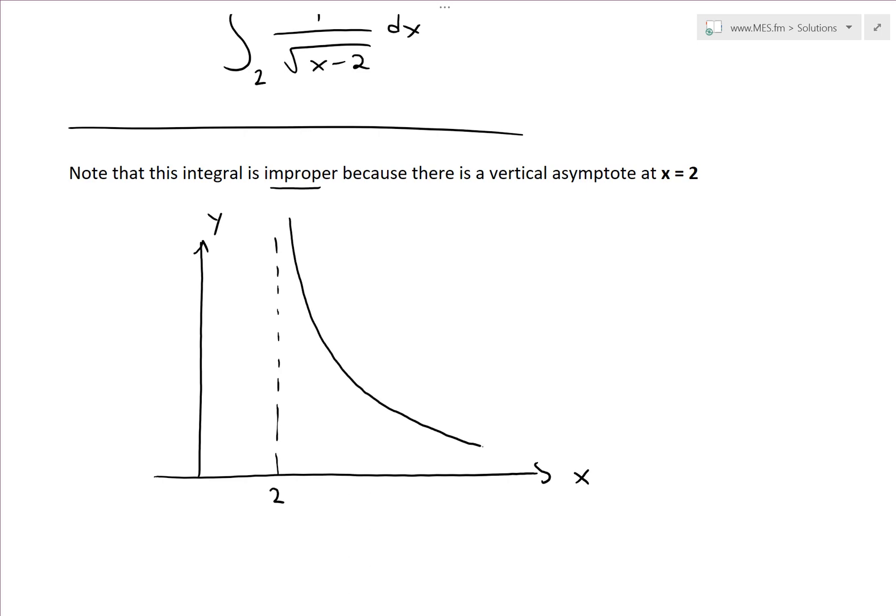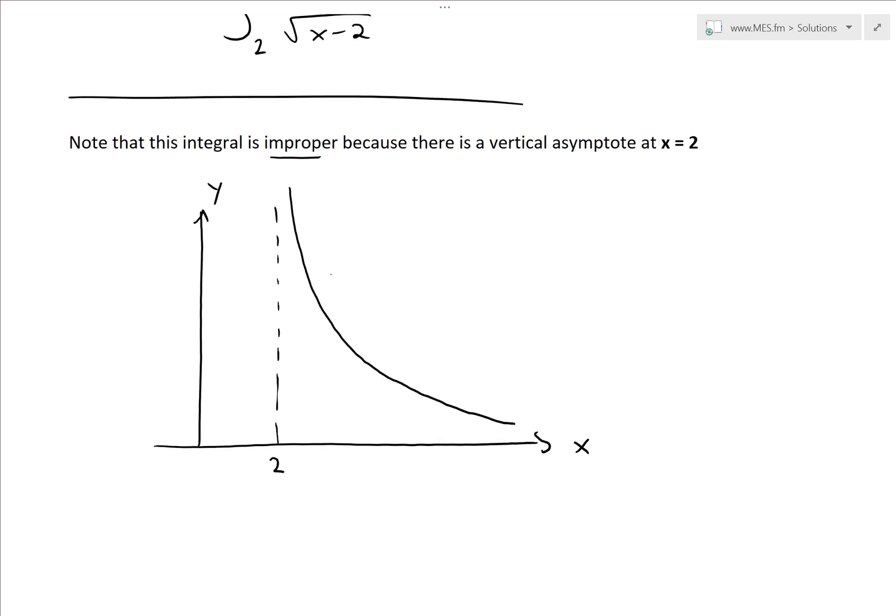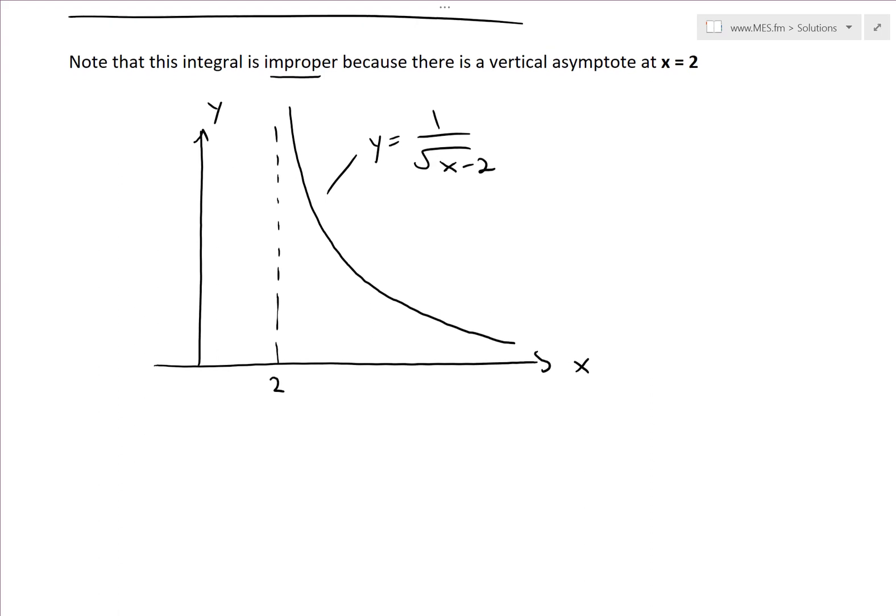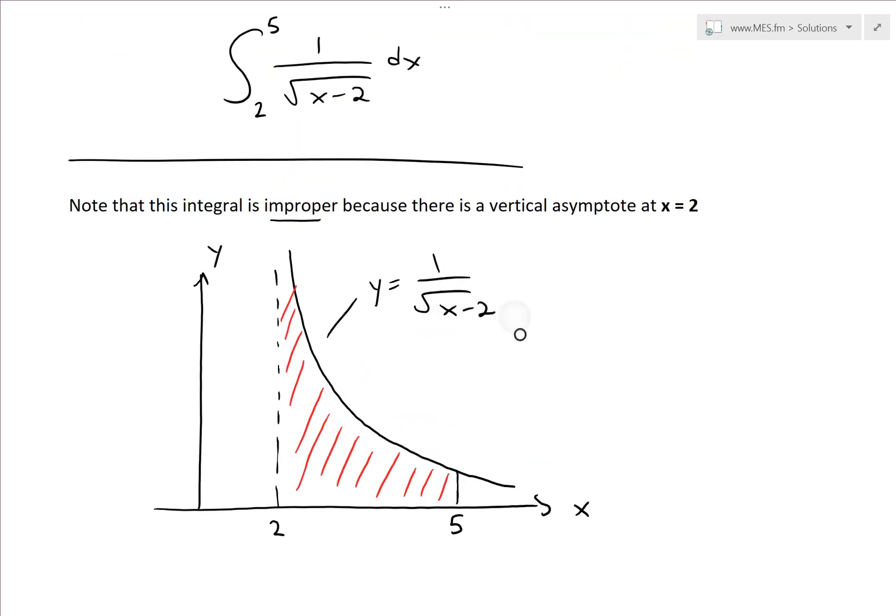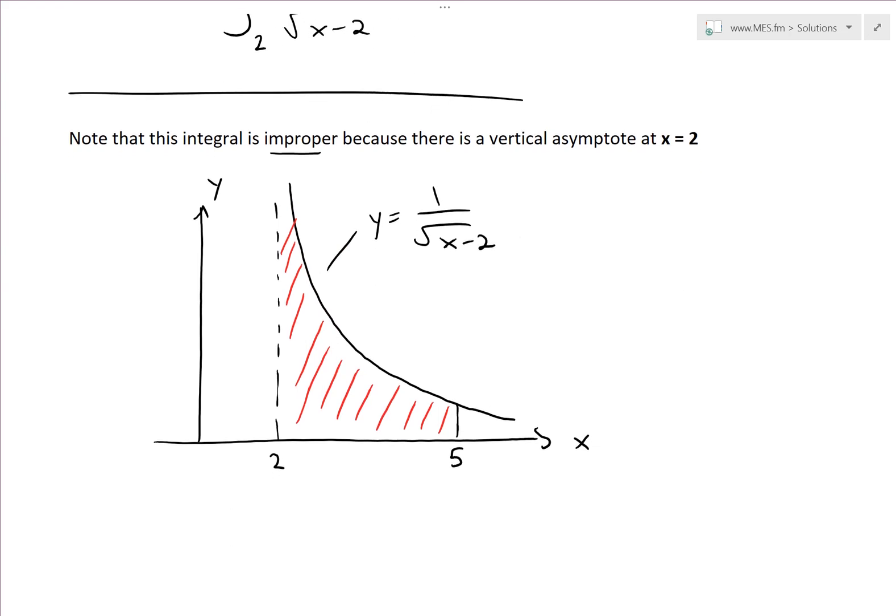So it looks something like this—that's how the function looks. This is y equals 1 over square root x minus 2. Here at 5, the area we're trying to solve is the area under the curve between these two parts. We need to solve the integral to see if it diverges or converges, meaning if we get a finite area or an infinite area.